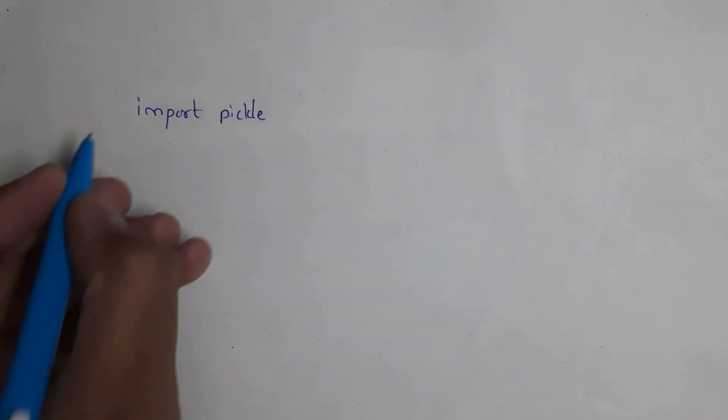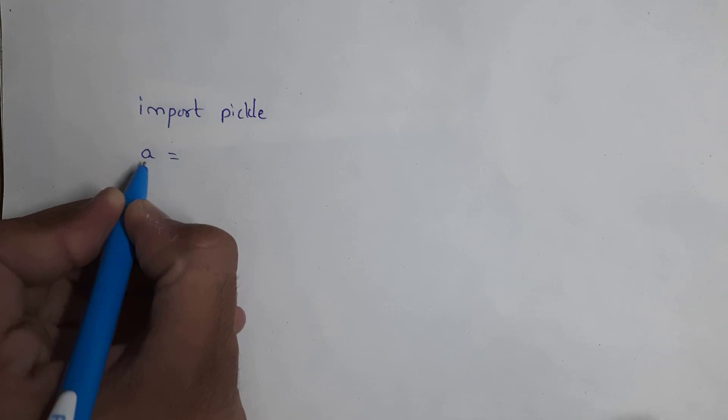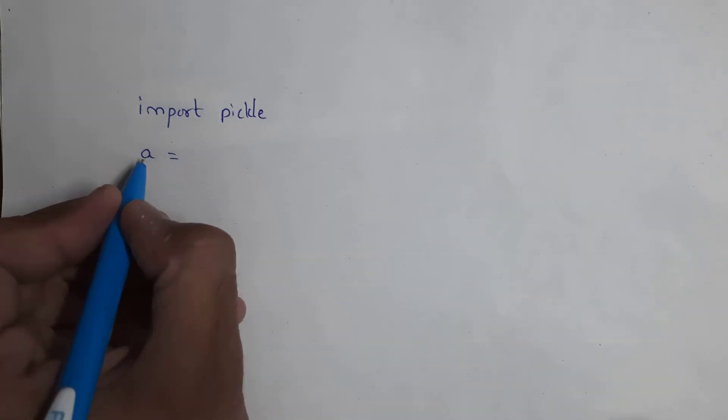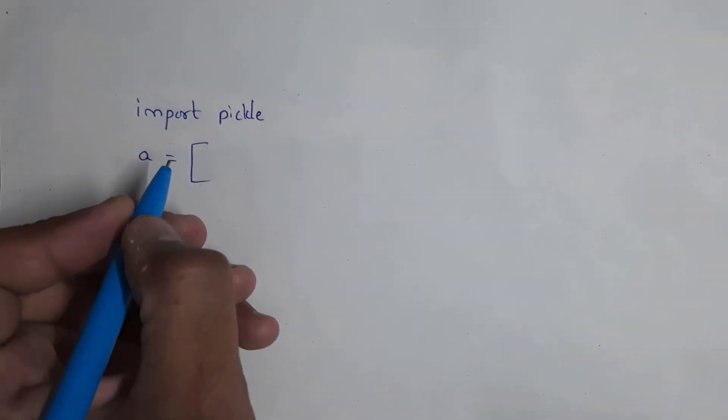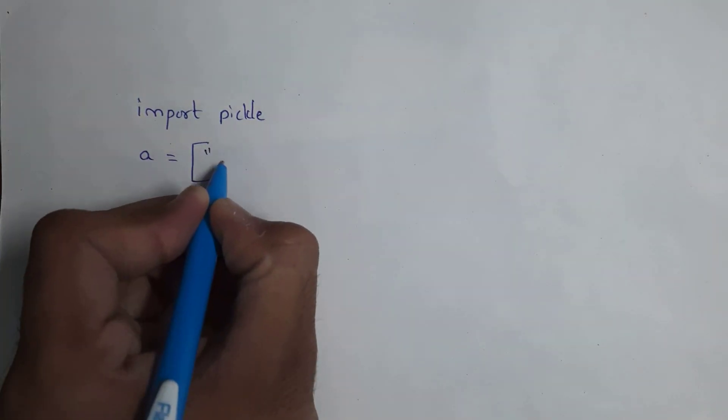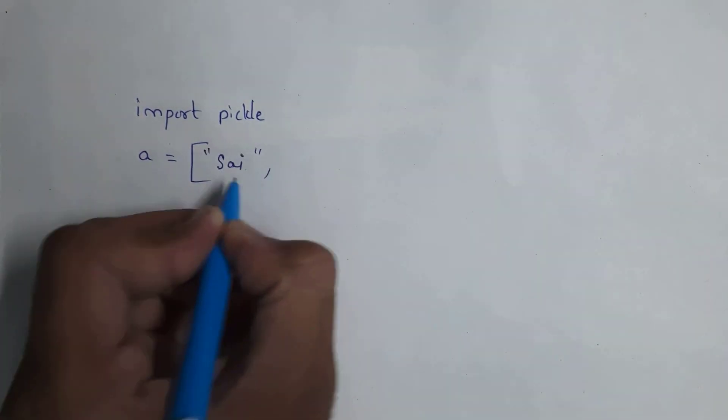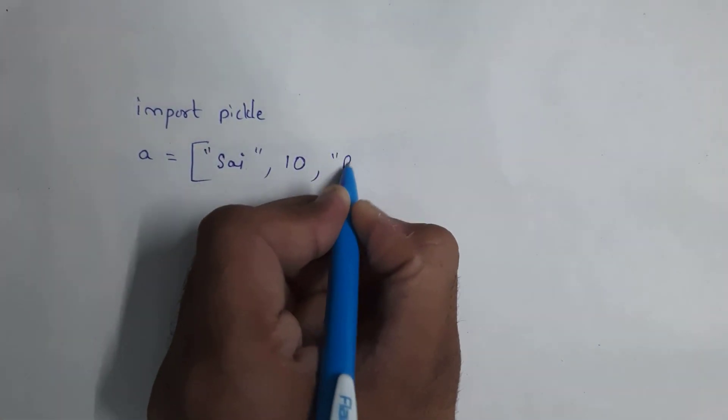Here is an example. First you need to import pickle module — by using the import keyword, write 'import pickle'. Let us consider one list: take a = ['psi', 10, 'btech']. Normally in previous examples we stored text in our file, like file.txt containing text data like 'hello', 'btech', 'how are you'. But now I want to store a list inside this file.